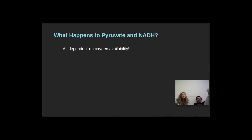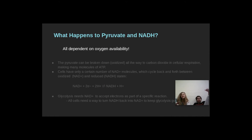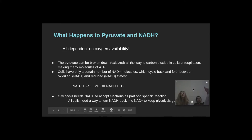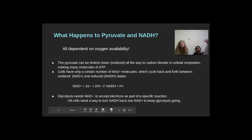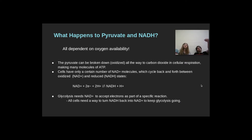It's all dependent on oxygen availability. Some organisms can only do aerobic respiration, and some can only do anaerobic respiration. Pyruvate can be broken down by oxidation all the way to carbon dioxide in cellular respiration, making many molecules of ATP — anywhere between 30 to 38 — depending on how ideal circumstances are.